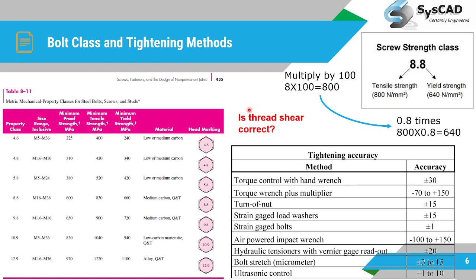Different bolt tightening methods have respective accuracies in how much preload is actually applied in reality. Strain gauge bolts have the highest accuracy because you can measure the exact force. The second most accurate method is ultrasonic control, which measures bolt stretch. The most widely used method is torque control with a torque wrench. Another commonly used method when no torque wrench is available is the turn-of-nut method.